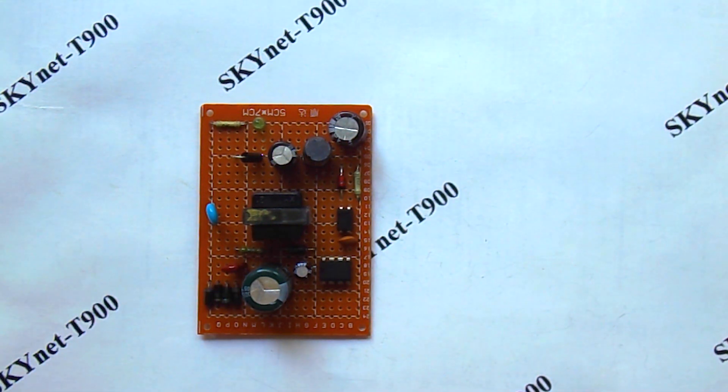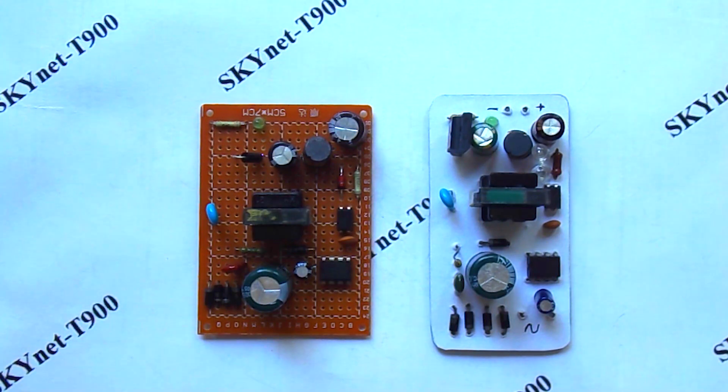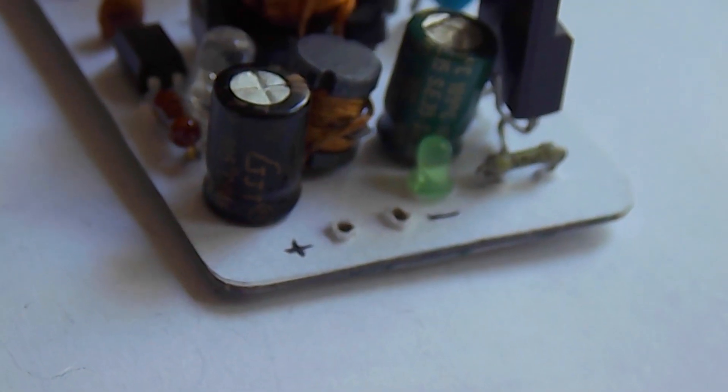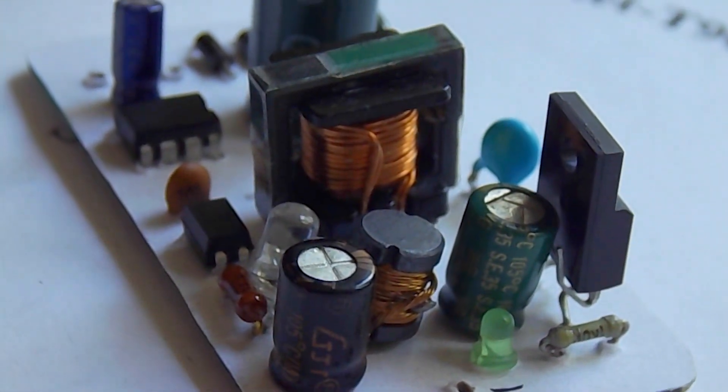Here is the 12V power supply I built in the previous video, and this is another only 6V. To change the output voltage of the power supply, we just need to rewind the secondary winding of the transformer and change a couple of parts.